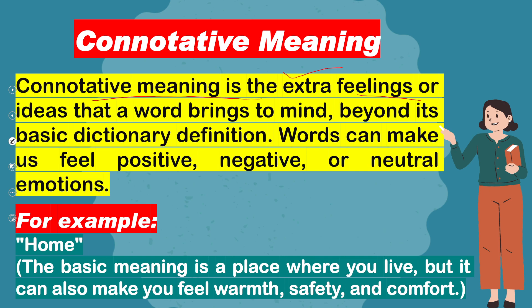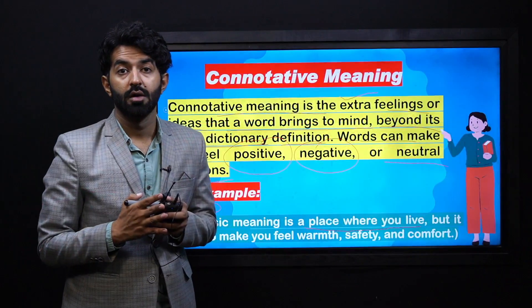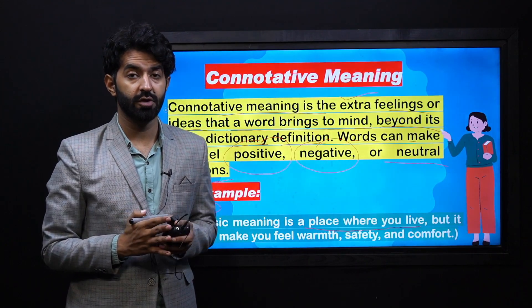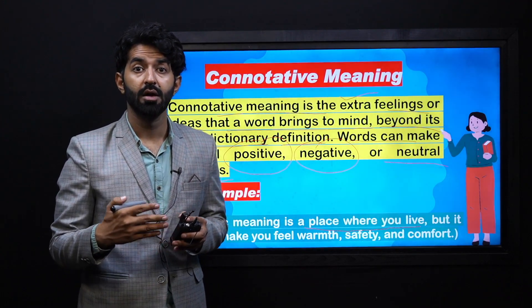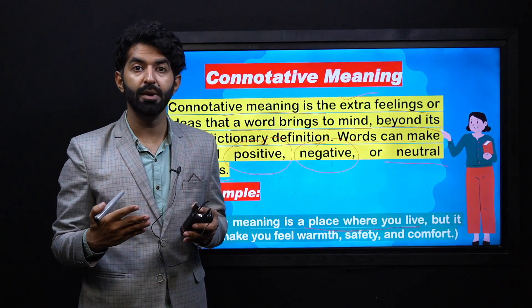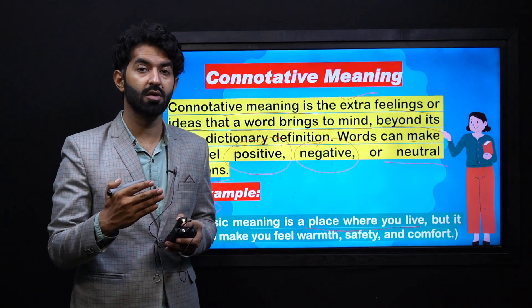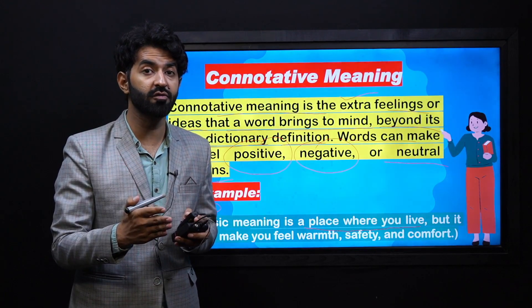Now let's talk about connotative meaning. Connotative meaning is the extra feelings or ideas that a word brings to mind beyond its basic dictionary definition. Words can make us feel positive, negative, or neutral emotions. For example, the word 'home' — the basic meaning is a place where you live, but it can also make you feel warmth, safety, and comfort. So connotative words give us a feeling or emotion. When you hear the word 'home,' it gives you a happy, comfortable feeling. This is what we call the connotative meaning of the word 'home.'